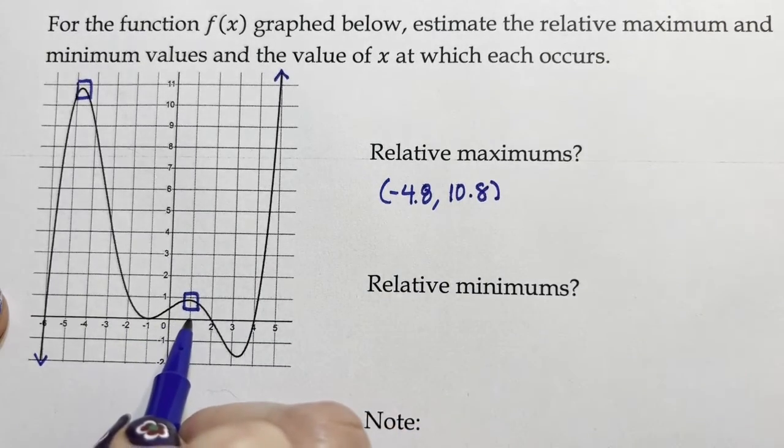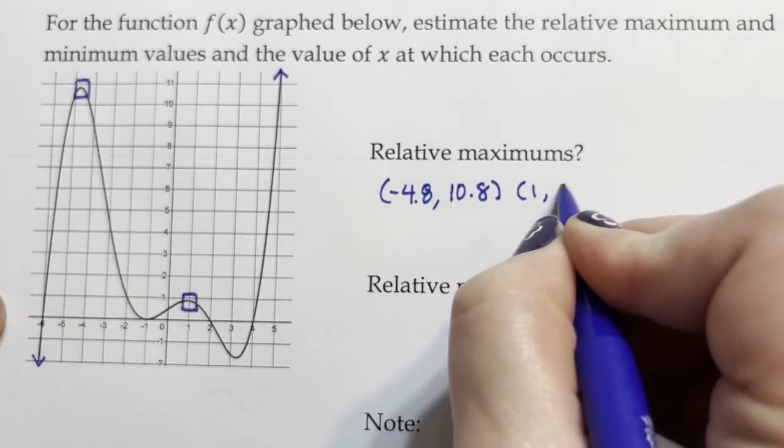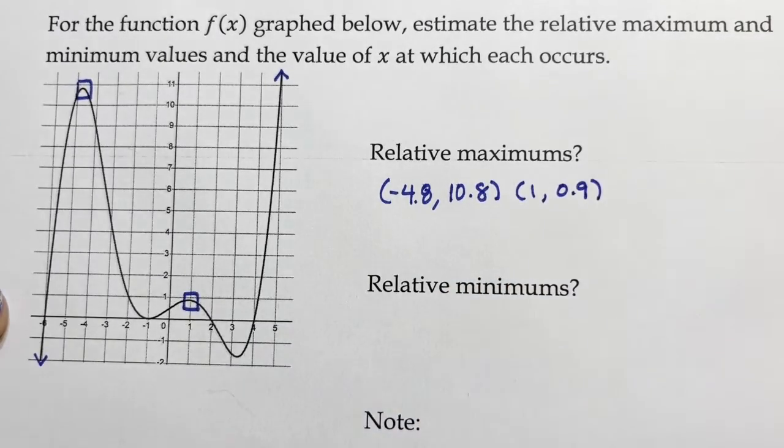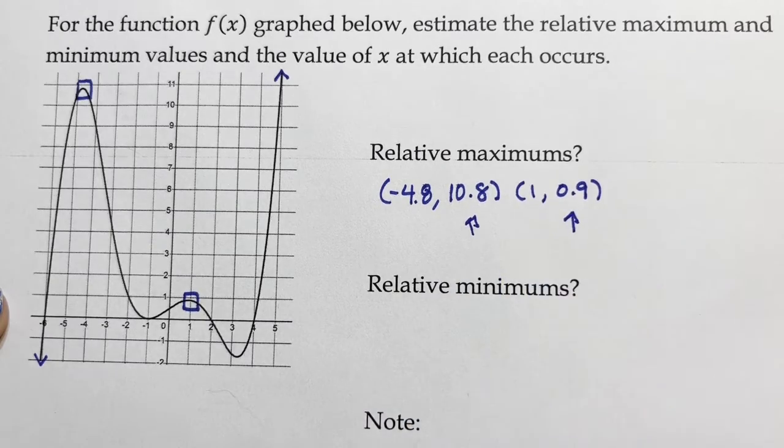For this one, the x-value that gets us there is 1, and it looks like it's about 0.9 as the value. So the value is the y-value, and it's the x that gets us there.